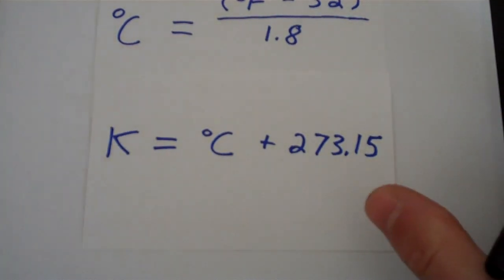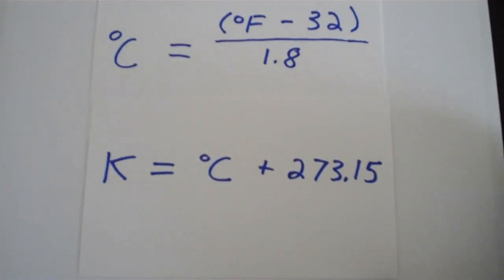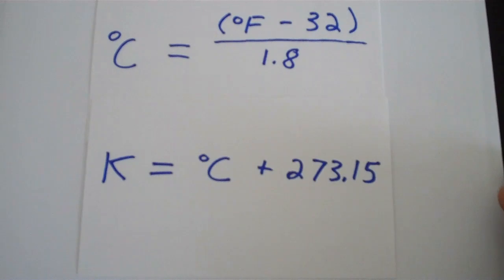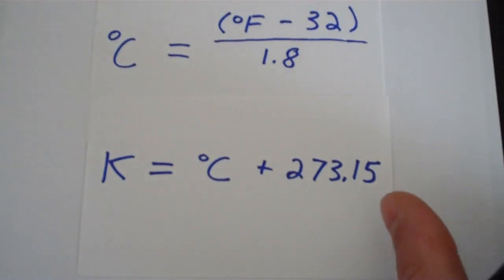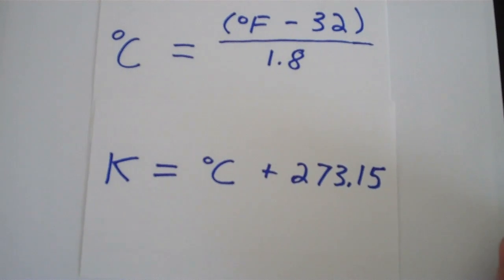And the interesting thing about this bottom equation here is that the change of one degree Celsius is exactly the change of one Kelvin. So degrees Celsius and Kelvin, they have the same numerical value. However, the scale is simply offset by 273.15.